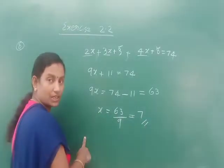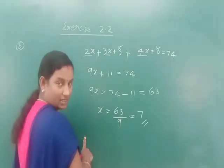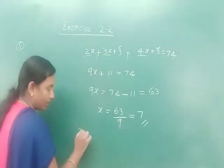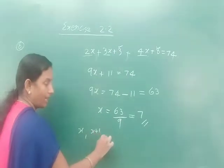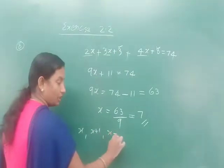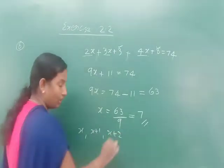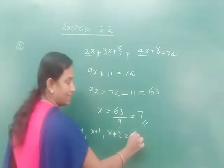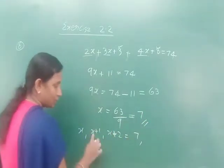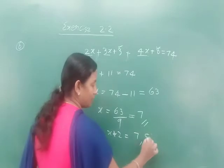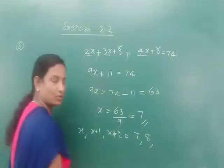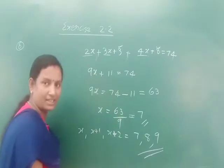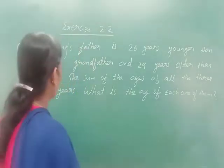Our question asks for the 3 integers. We had taken them as x, x+1, and x+2. Substituting x = 7: first integer is 7, second is 7+1 = 8, third is 7+2 = 9. So these are the 3 integers.